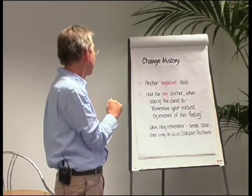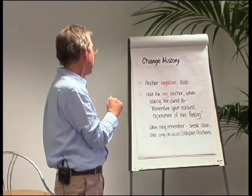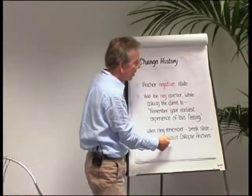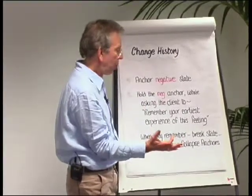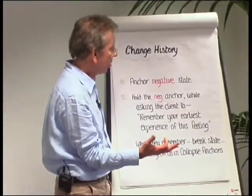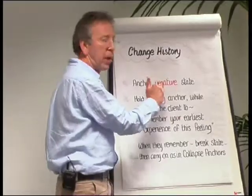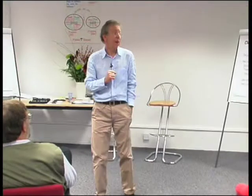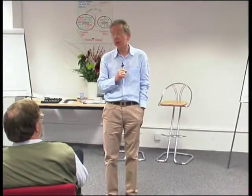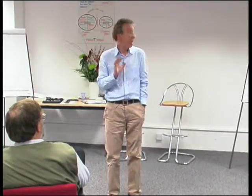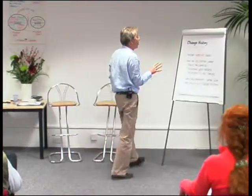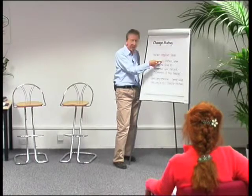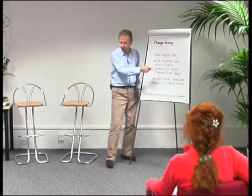That will bring them back to the earliest one. You then carry on as in a normal collapse anchors, collapsing whatever the strong positive resource is into the earliest memory of the negative state. There's some evidence that this has a beneficial effect, and some people certainly like it as a way of working. So if you come across change history in the books, it's collapse anchors plus this bit of riding the negative anchor back to the earliest memory.